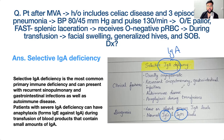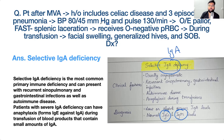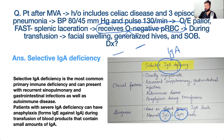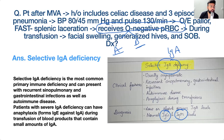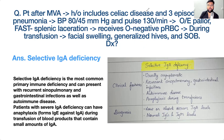In selective IgA deficiency, IgA levels are low but IgG and IgM levels are normal. Since the patient lacks IgA, they form antibodies against any exogenous IgA they may receive. O-negative blood group carries no A or B antigens but does have anti-A and anti-B antibodies.